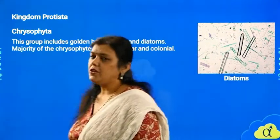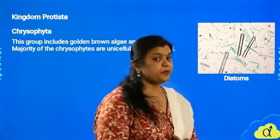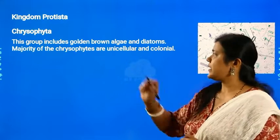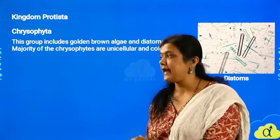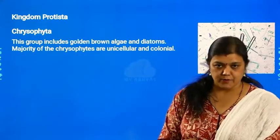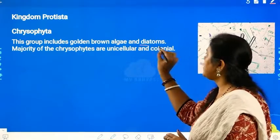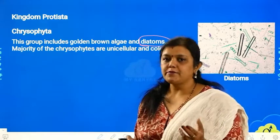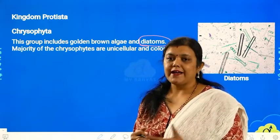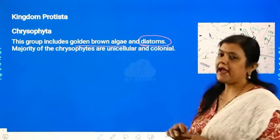What is chrysophyta? These organisms basically have a very hard and rigid type of structure. Chrysophyta are golden brown algae, and they are also called as diatoms. Diatoms are asked so many times in exams — you may get questions worth two marks on diatoms, such as what are diatoms and what are their uses. So this group includes golden brown algae and diatoms.